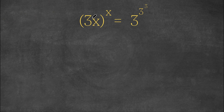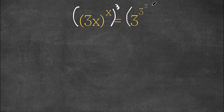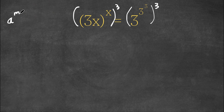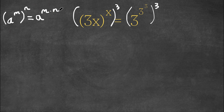What I'm first going to do is take the power of 3 on both sides. So now we have 3x to the power of x to the power of 3 is equal to 3 to the power of 3 to the power of 3. And if we have something in the form a to the power of m to the power of n, this is equal to a to the power of m times n. So 3x to the power of x to the power of 3 is equal to 3x to the power of x times 3, which is simply just 3x.